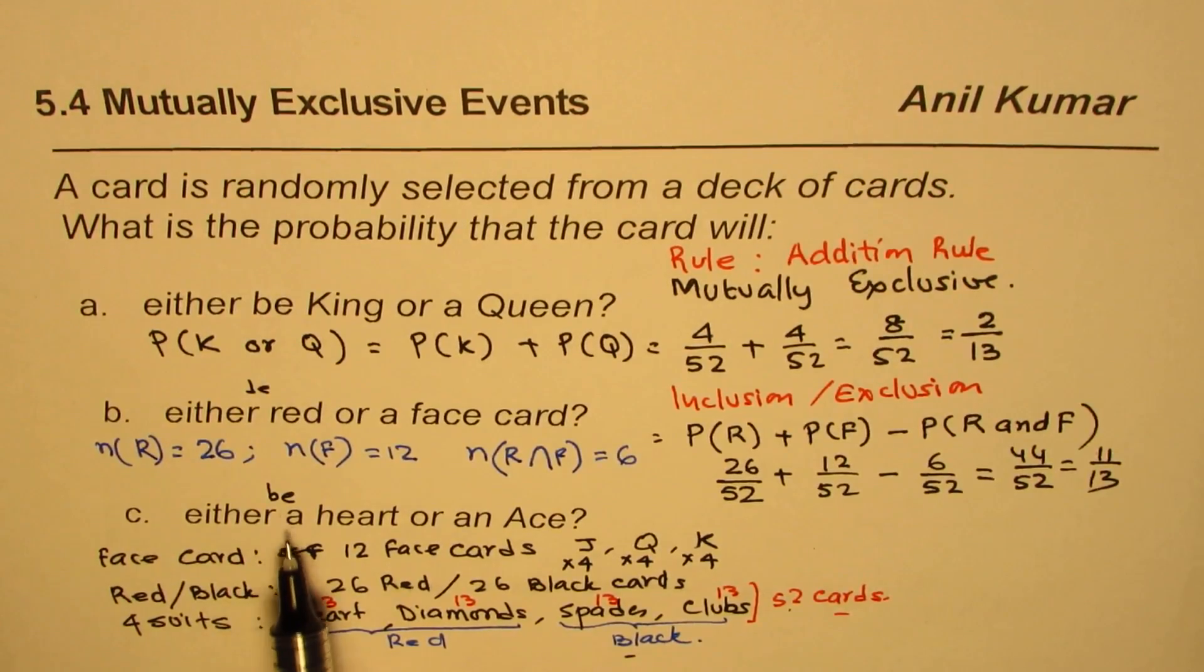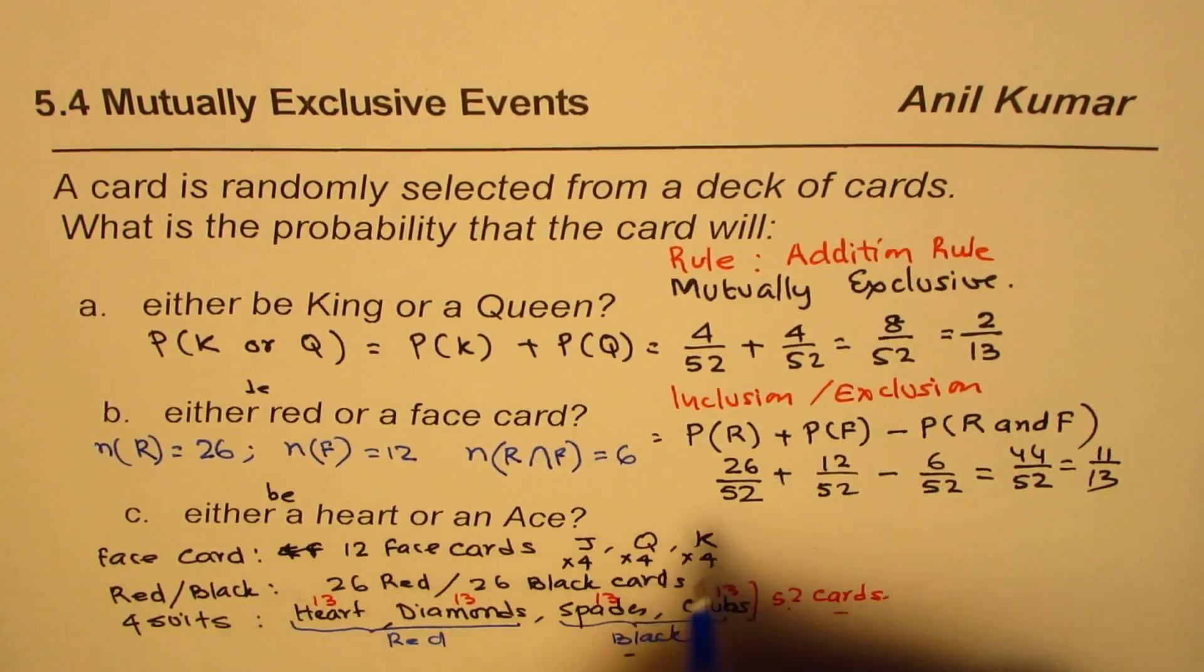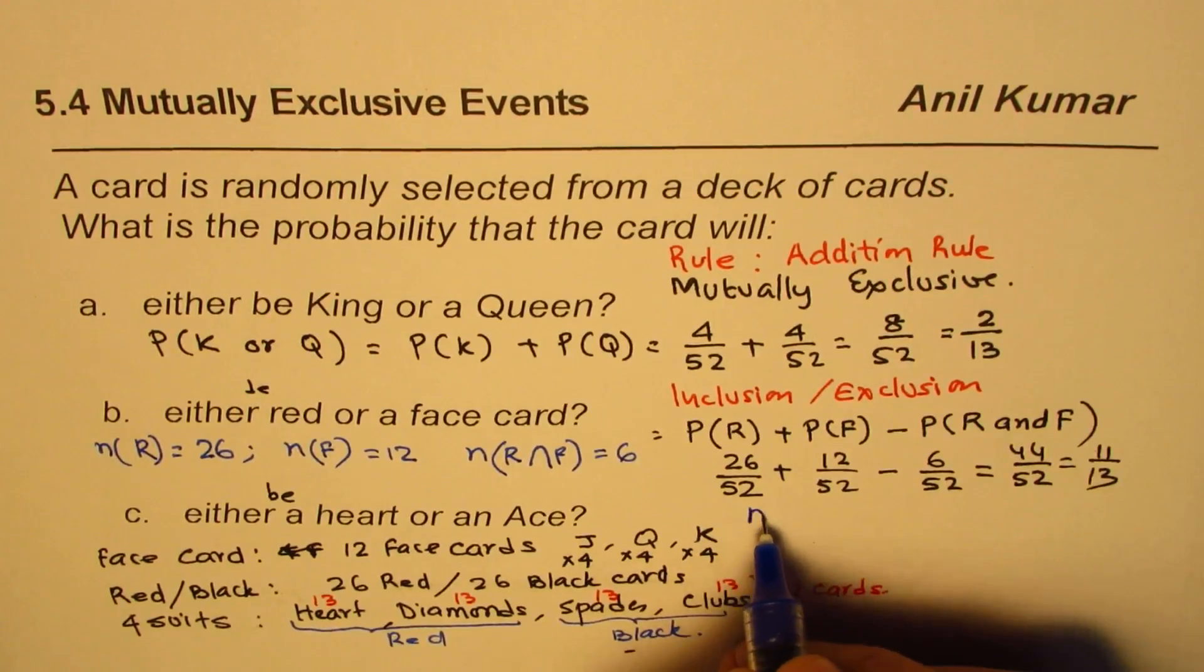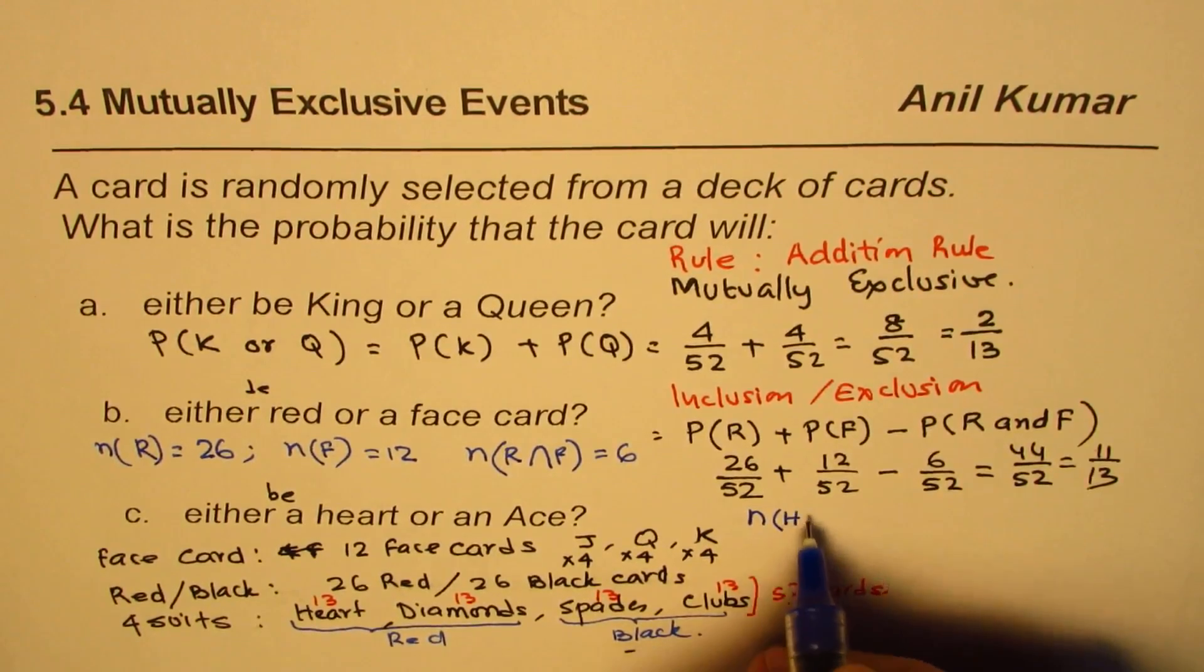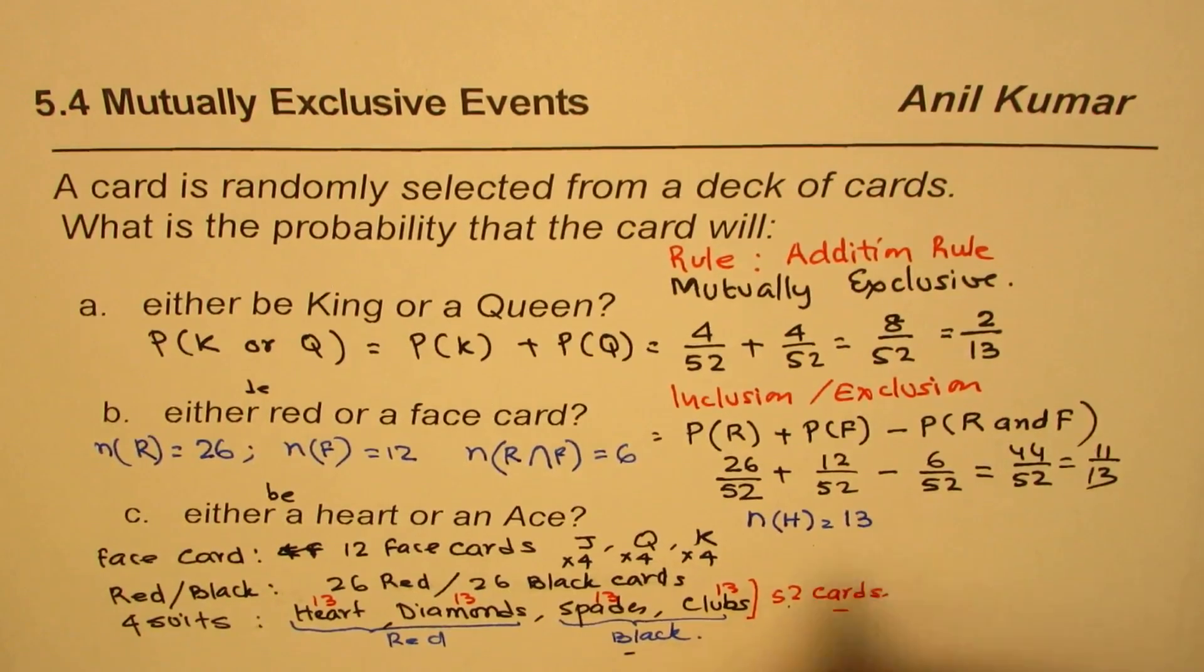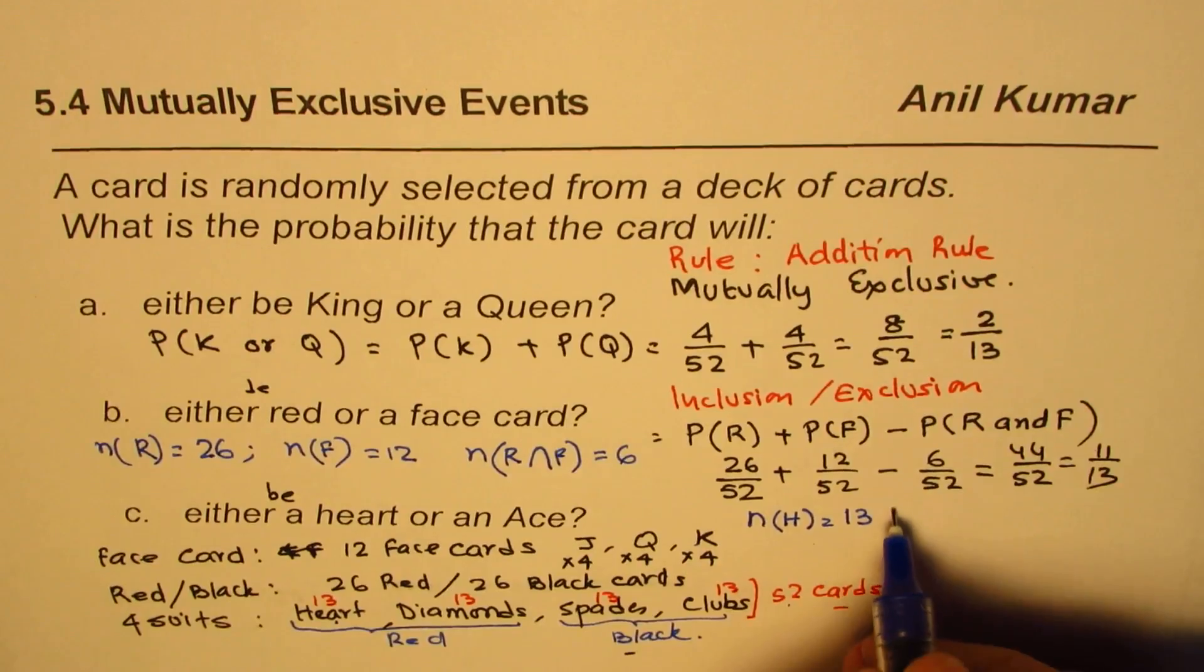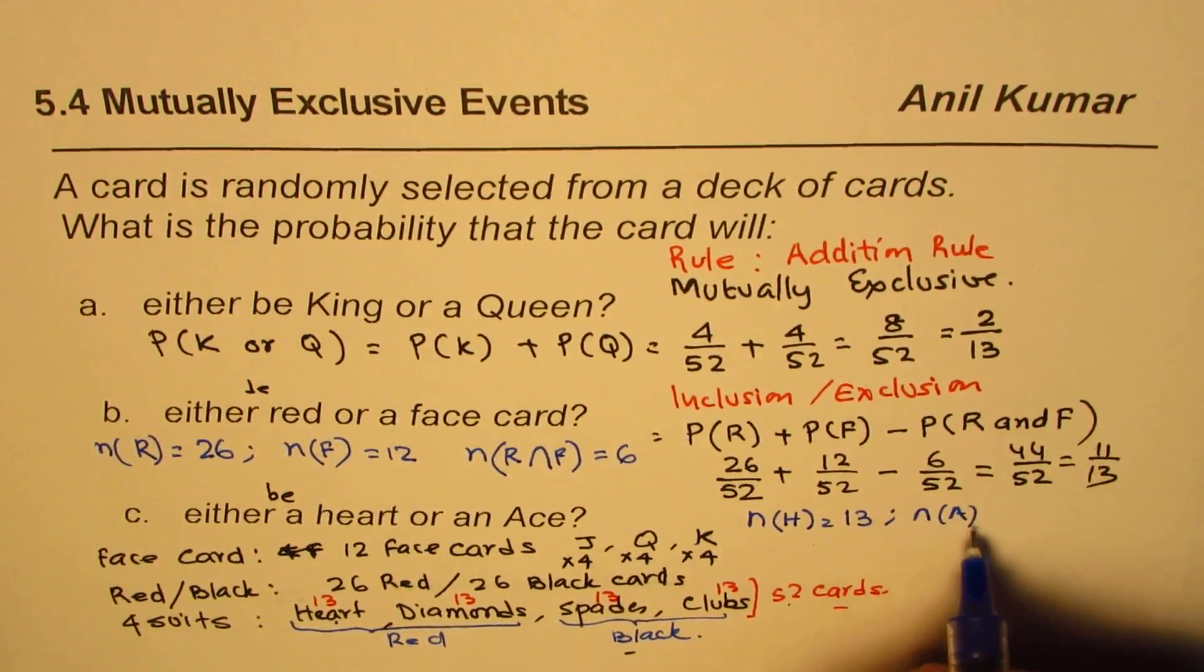The last one: either be a heart or an ace card. In this case, how many are hearts? The number of cards which are hearts is 13. Or an ace? The number of aces, we have 4. How many are common between the two? There is just one ace which is hearts.